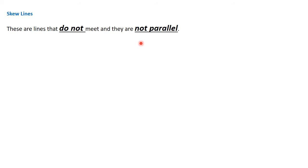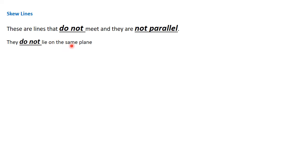Beginning with skew lines, these are lines that do not meet and they are not parallel. Skew lines are lines that do not meet and they are also not parallel. That's only possible because they do not lie on the same plane — otherwise, they should be able to meet.